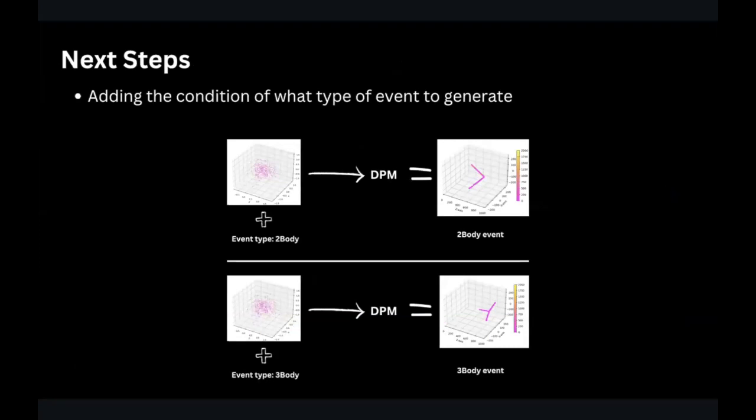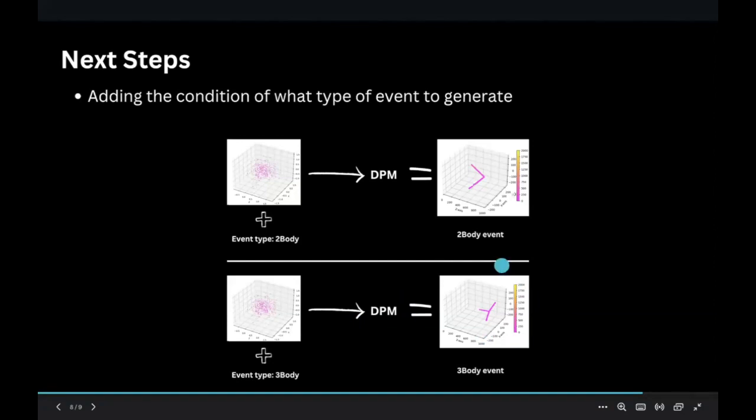And our next steps is adding the condition of what type of event we want to generate. For example, we want two-body type, we put it in DPM and we get two-body events. We want three-body, put it in DPM and we get three-body events. So something like this. Thank you for your attention. Thank you, Artem. Any questions for Artem? All right. Thanks again. Next up, Valerie.